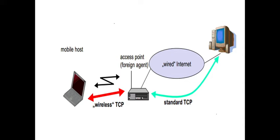A standard TCP connection is used from the fixed network to the access point — meaning a wired connection using the traditional TCP with no changes. From the fixed network to the wireless network, a packet can be moved in either direction. In Indirect TCP, the access point, which is called the foreign agent, acts as a mediator between the mobile host and the standard TCP.